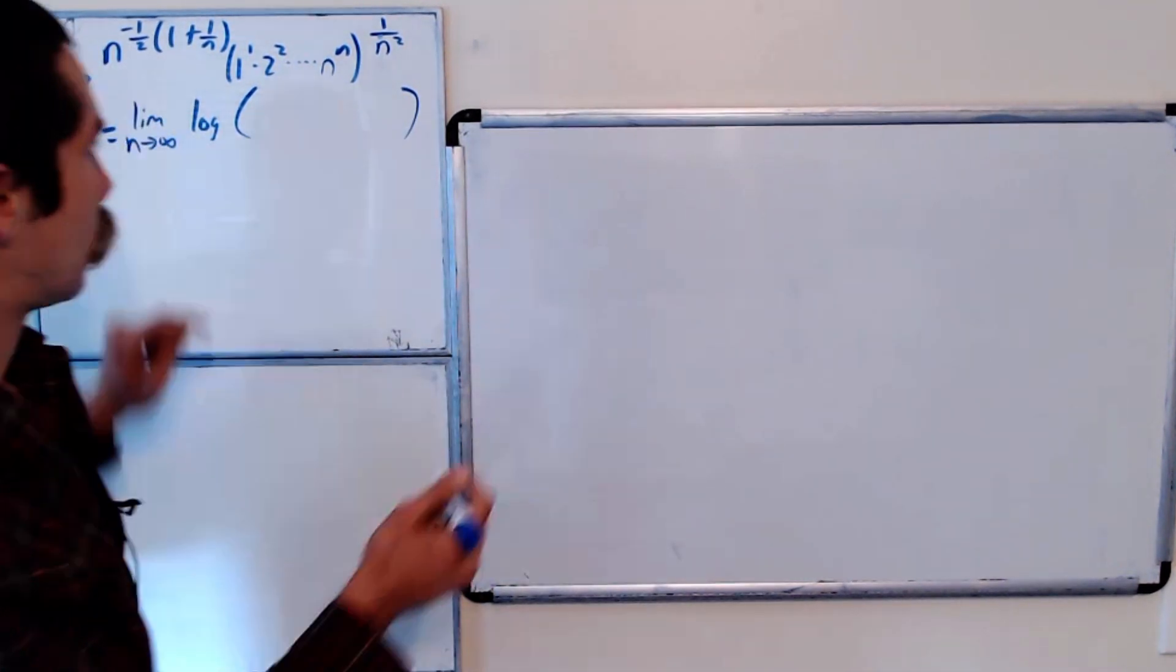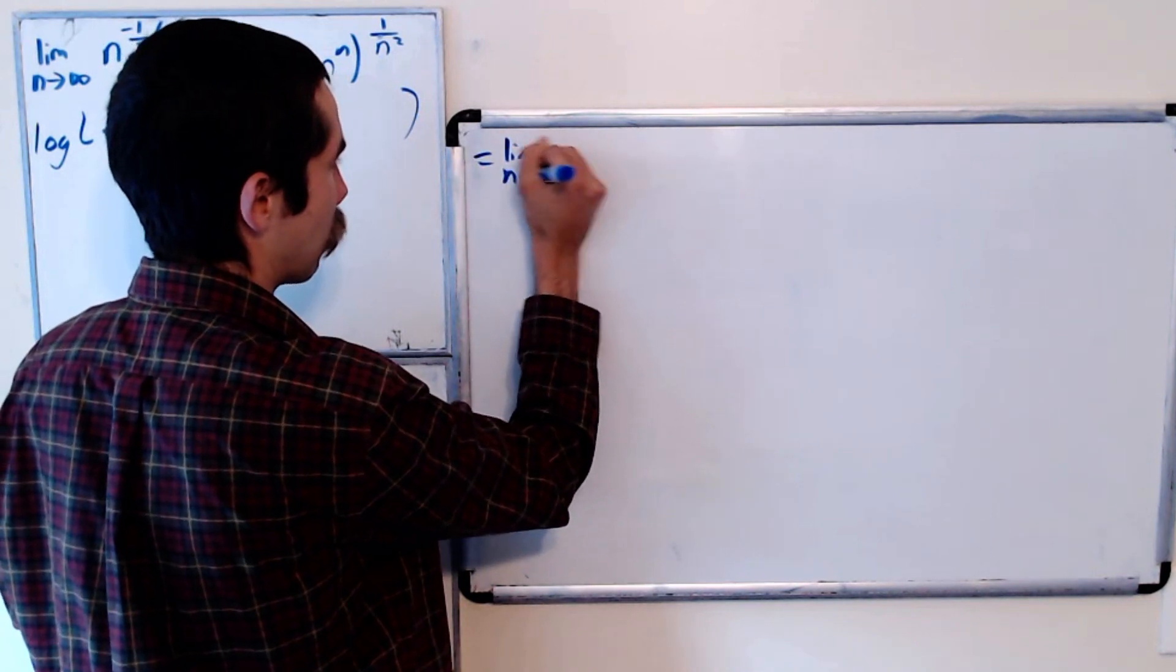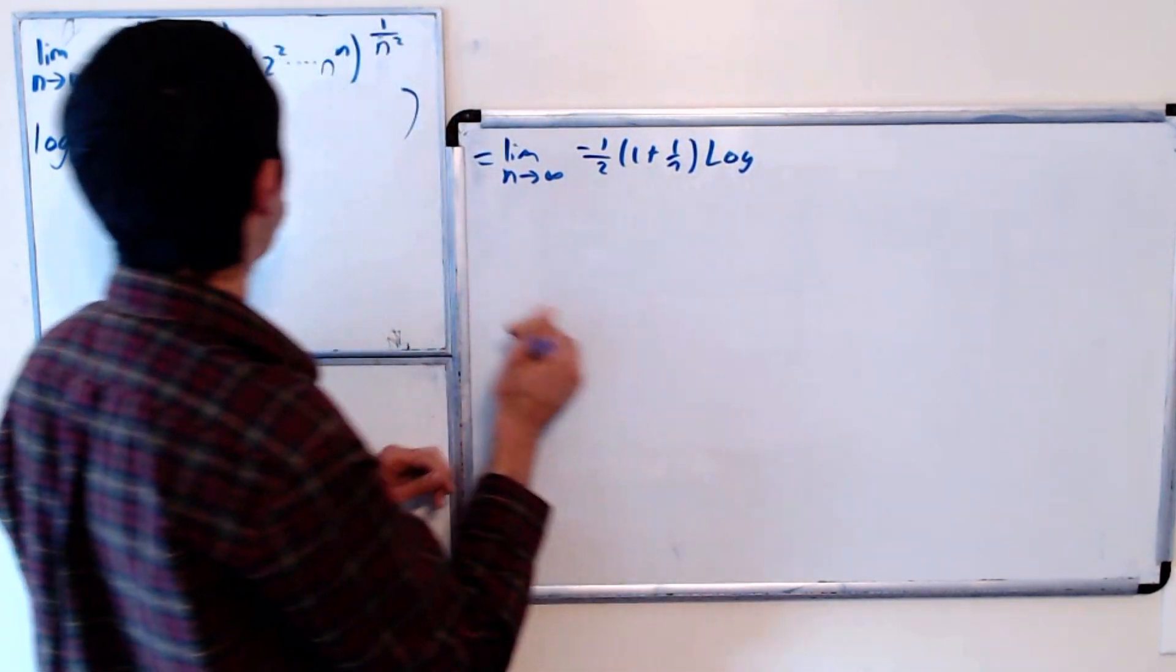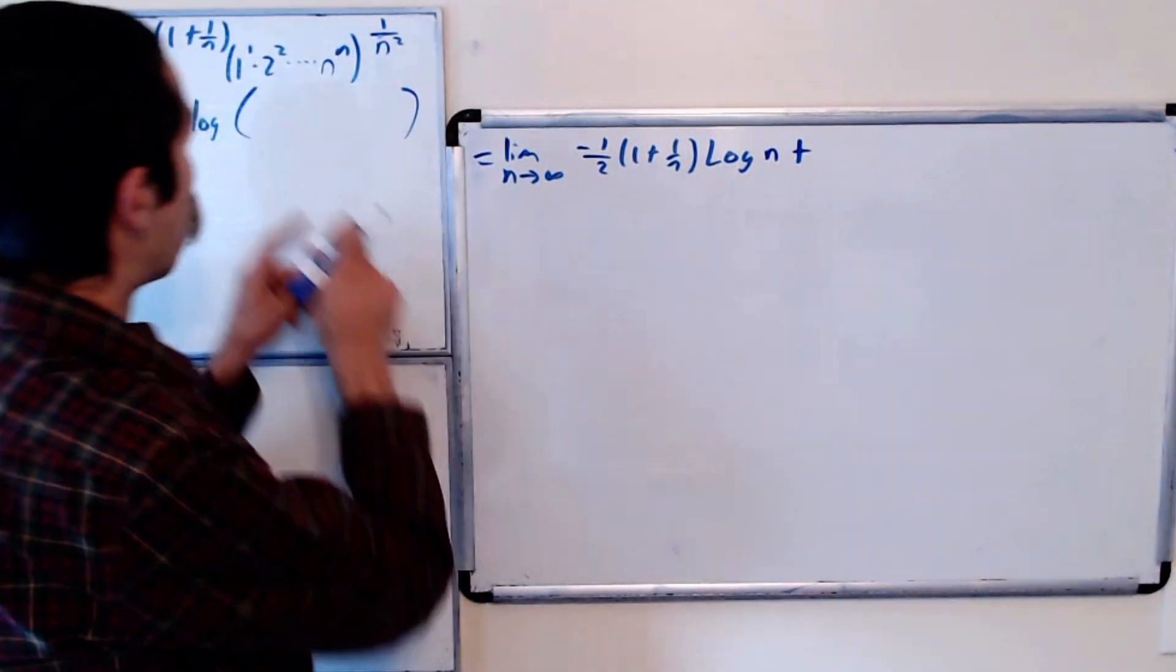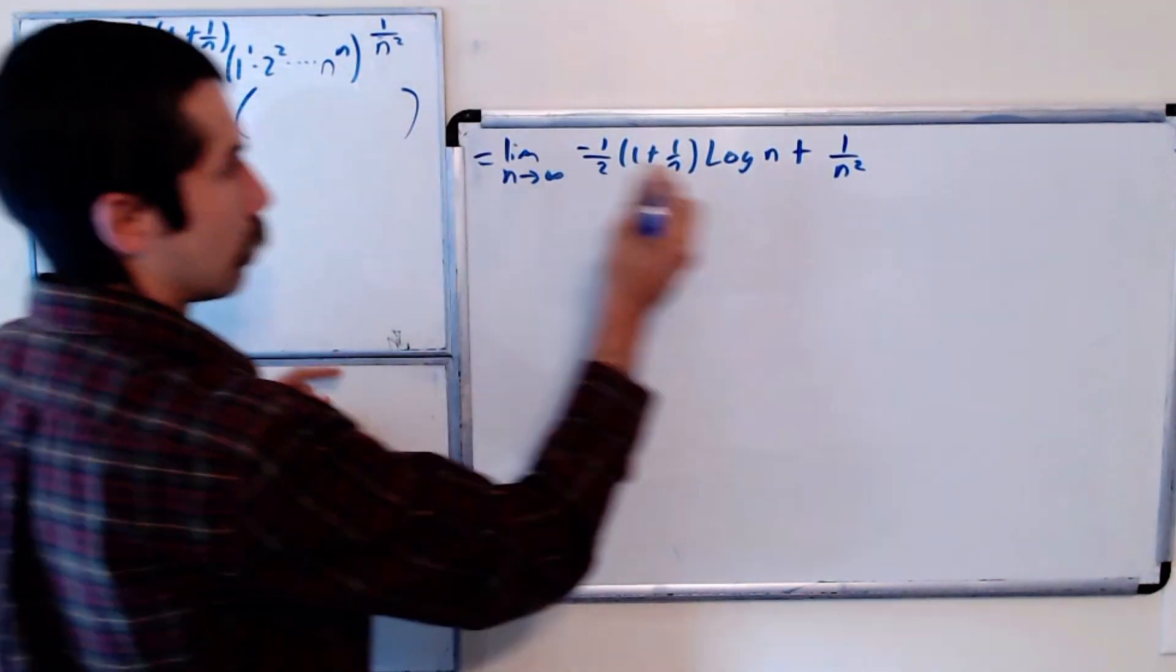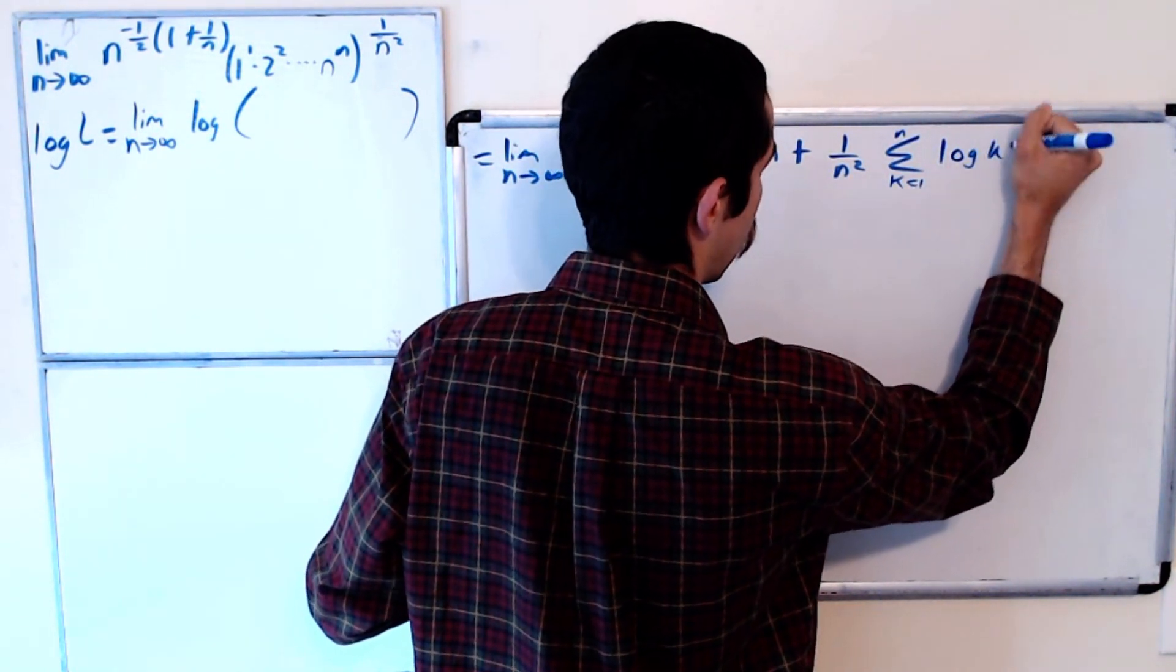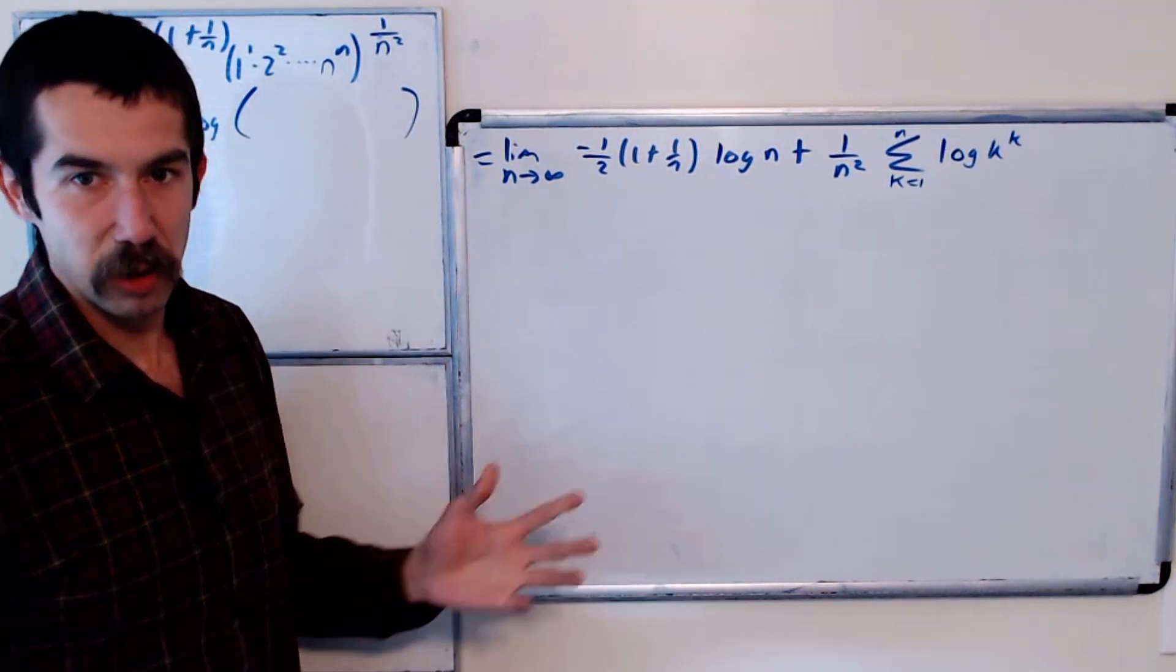Okay, so using log rules we could break apart this product as the sum of logs. So each time we have a limit as n goes to infinity and I'll bring the power in front as well. So negative one half times one plus one over n log of n plus, we have a bunch of products all with a 1 over n squared in front of it. And remember, the log of a product is just the sum of the logs. So k equals 1 to n of log k to the k.